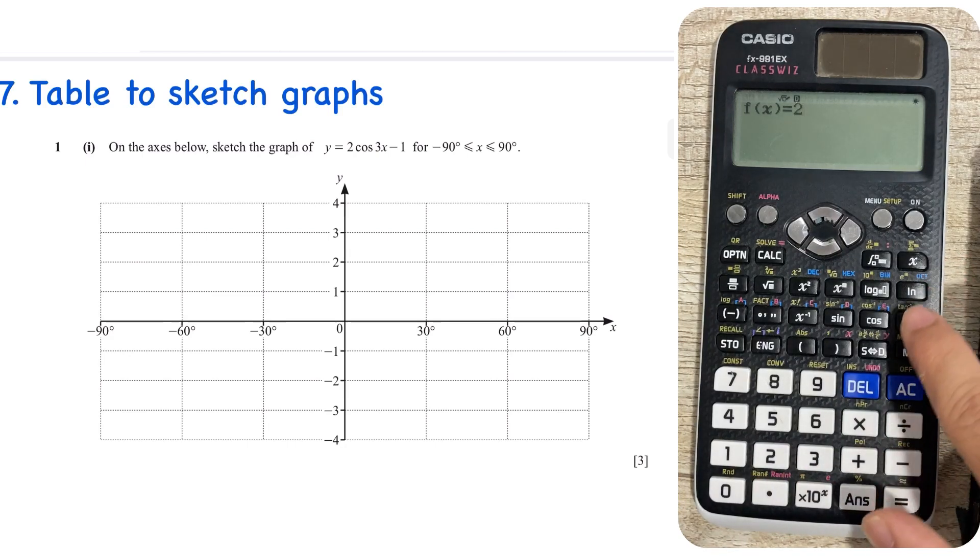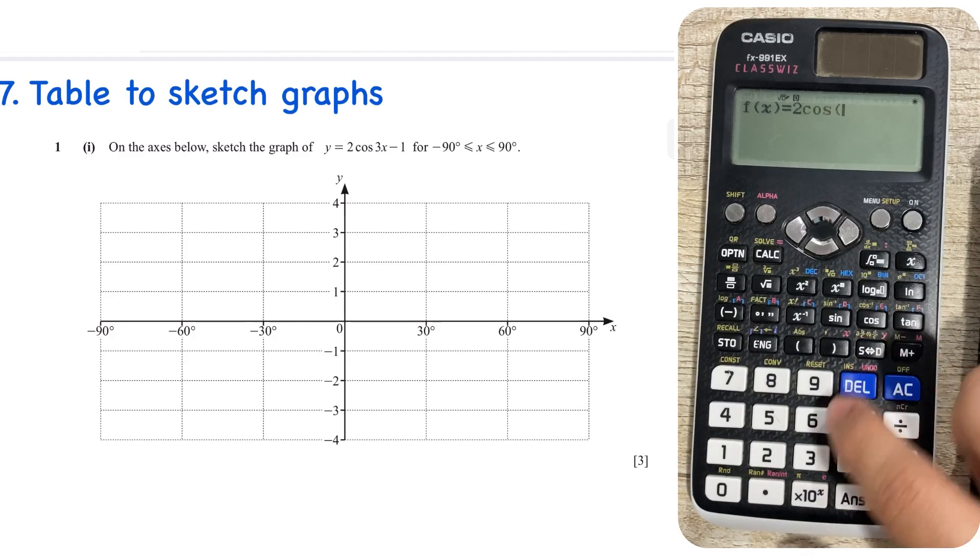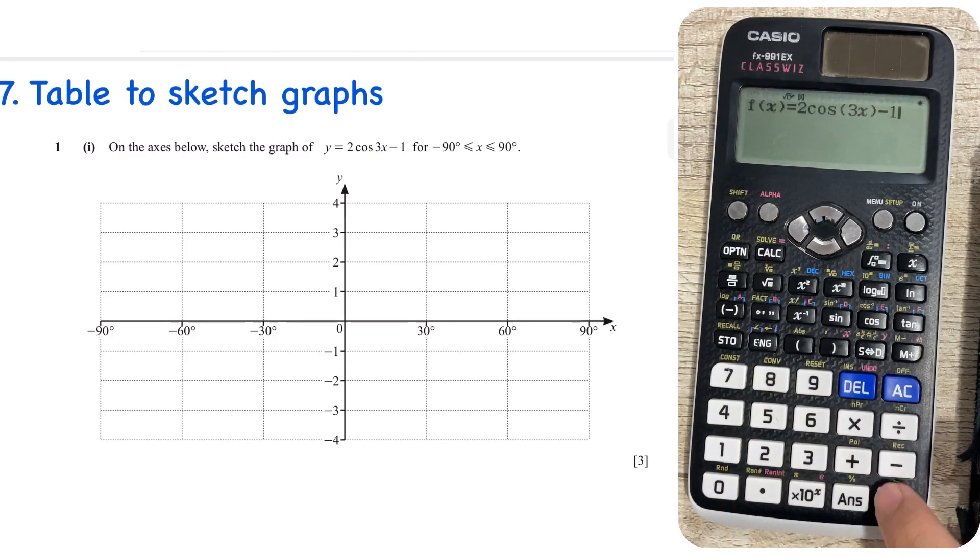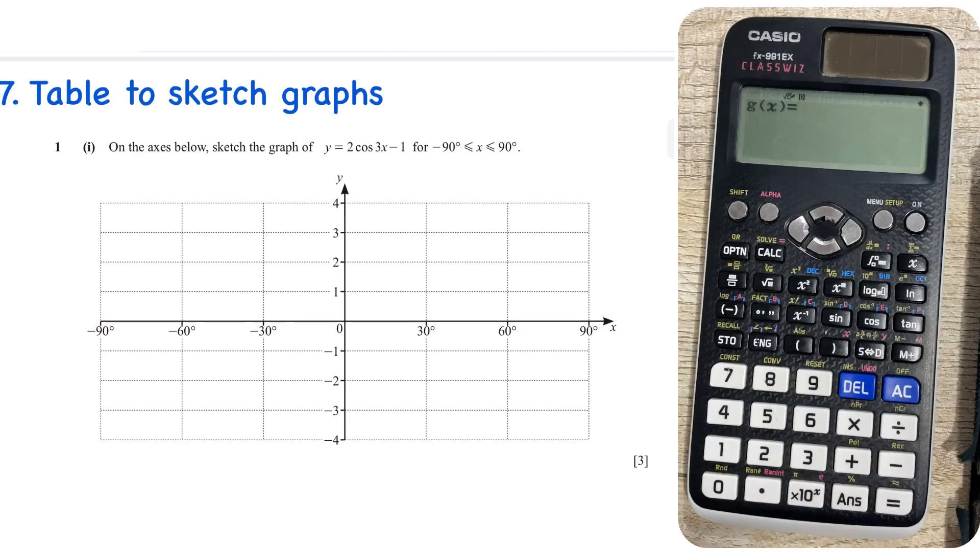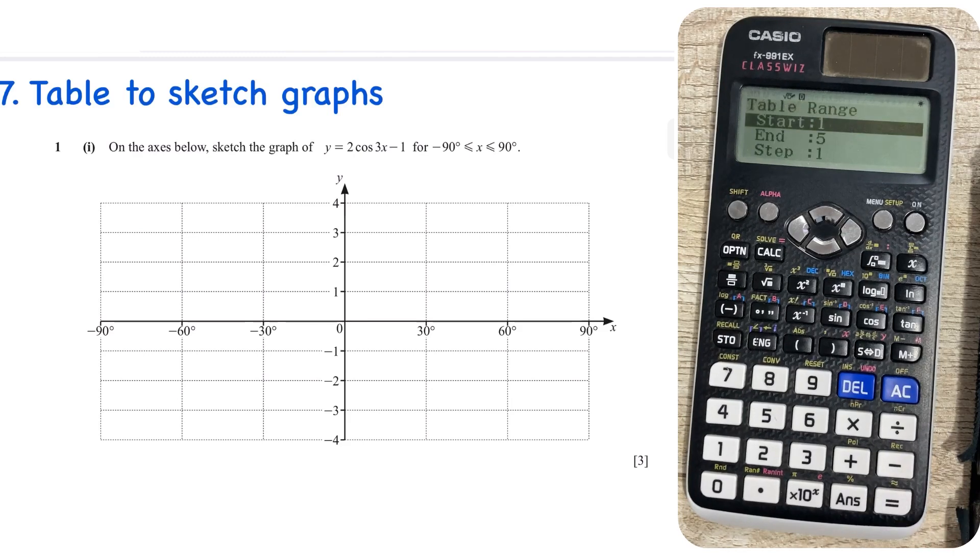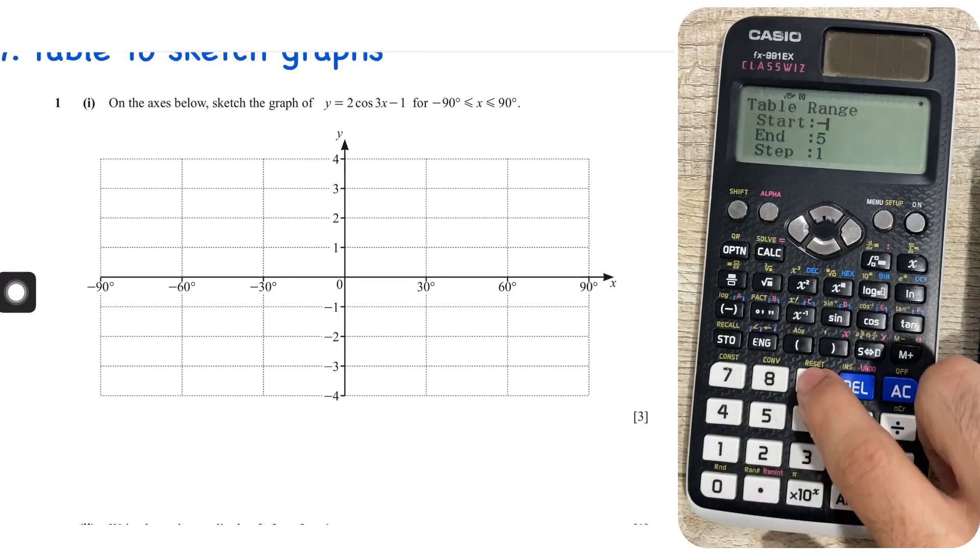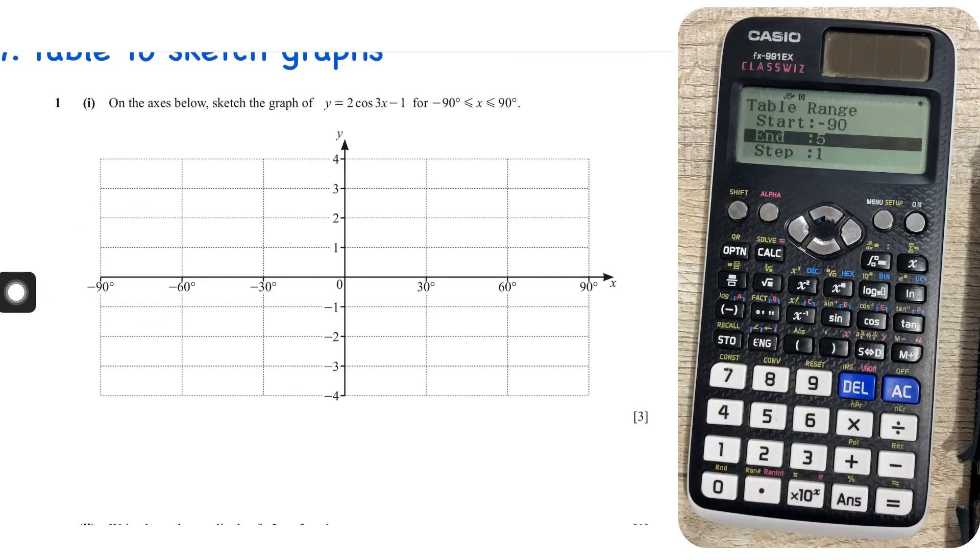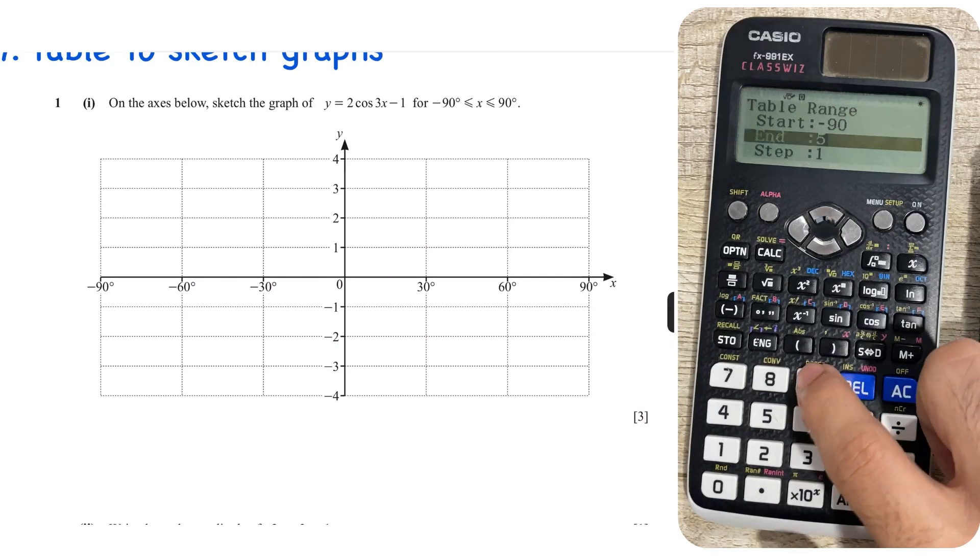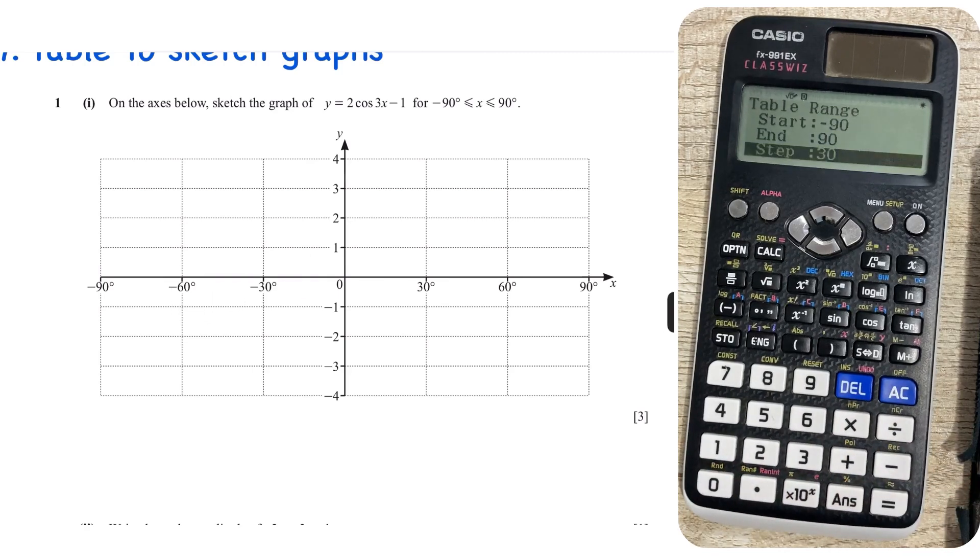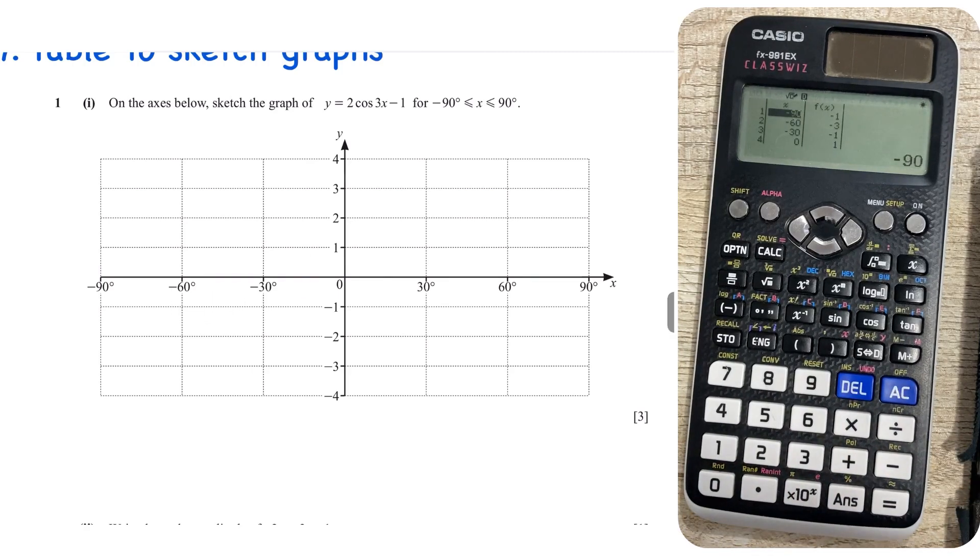Make sure that your calculator is in degree mode, because the question is in degree, so that's 2 cos 3x, close the bracket, put a minus 1 at the end, press equals. Now it's going to ask you for g of x, skip that, because this means, this is basically, if you want to make two graphs at once. So where are we starting from, we're starting from minus 90, so we write minus 90 as our starting value. Where are we ending, we're ending at 90, so we write 90 as our ending value. What's the step, step is basically the intervals that we have in between, so you can see there's a 30 degree interval every time.